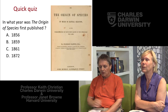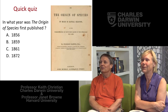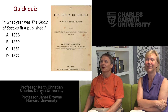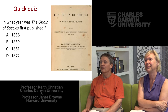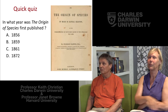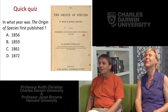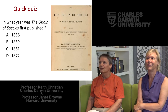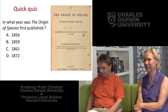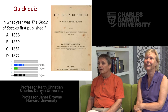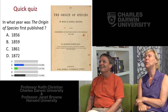Now a very easy quiz: what year was The Origin of Species first published? Was it 1856, 1859, 1861, or 1872? Almost everybody answered correctly — it was 1859. Just four or five years ago, we celebrated the 150th anniversary, and there were celebrations here in Darwin and the rest of the world.